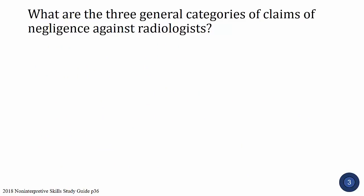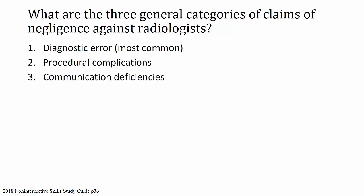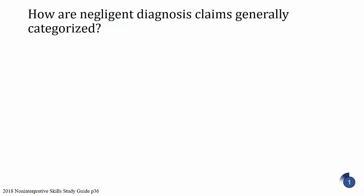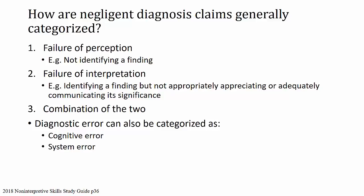What are the three general categories of claims of negligence against radiologists? The most common claims fall into one of three categories: diagnostic error (the most common), procedural complications, and communication deficiencies. Negligent diagnosis claims usually fall into one of three subcategories: failure of perception — not identifying a finding; failure of interpretation — identifying a finding but not appreciating or communicating its significance; or a combination of the two. Diagnostic error can also be characterized as a cognitive error or a system error.